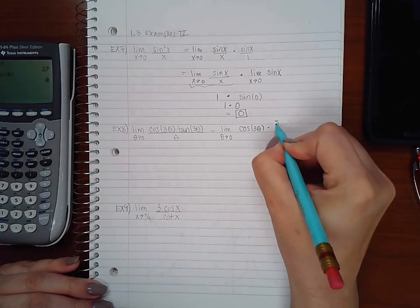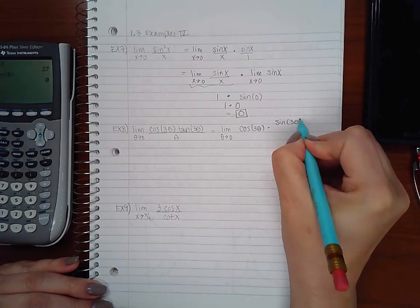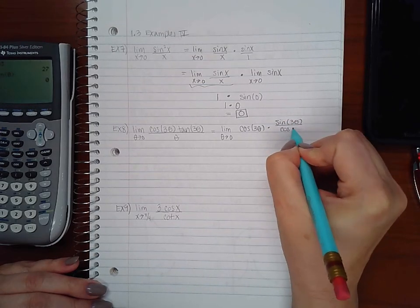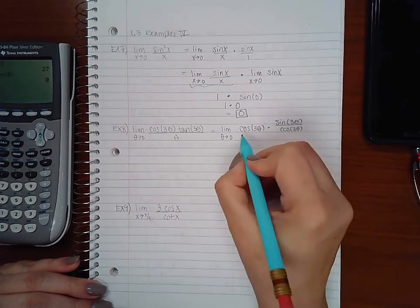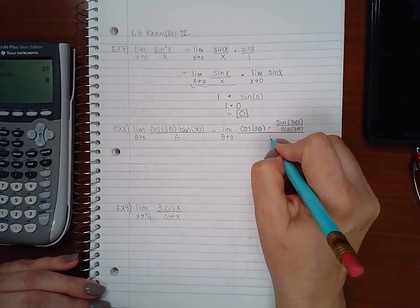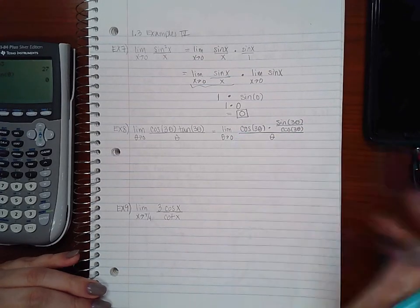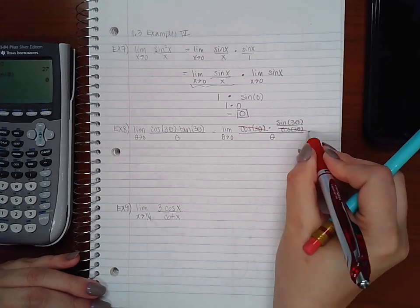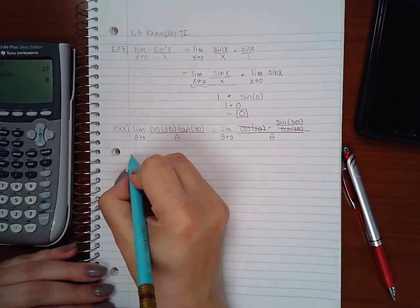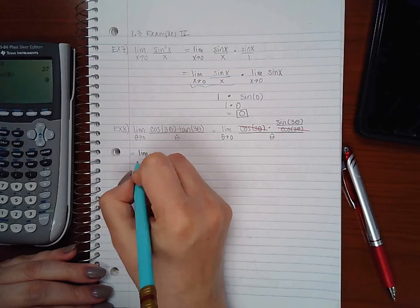Tangent is sine of 3 theta over cosine of 3 theta. This cosine of 3 theta will reduce or cancel with that cosine of 3 theta leaving me with sine of 3 theta over theta.